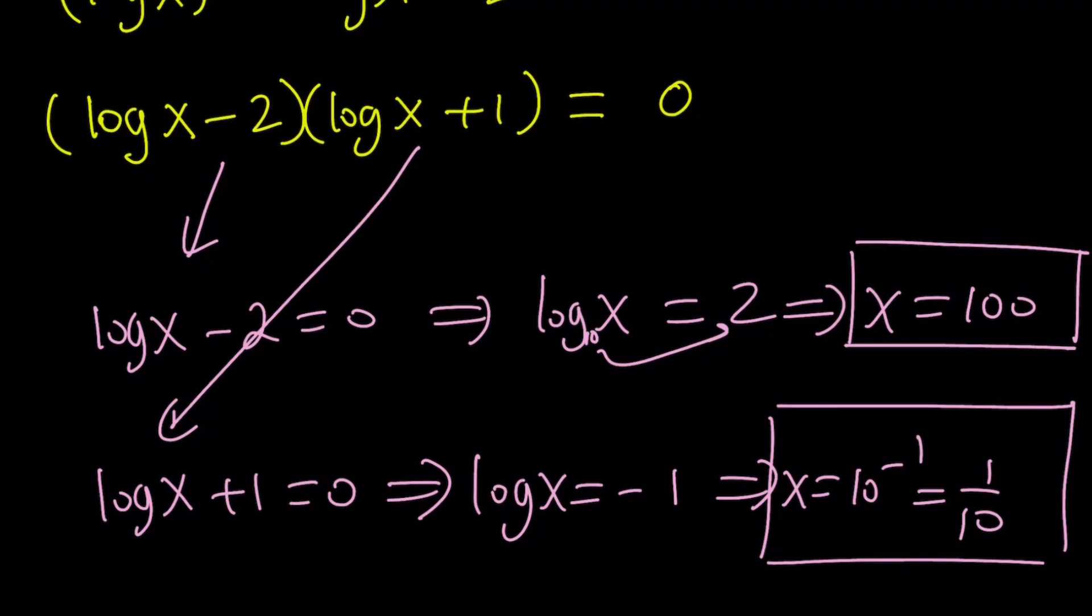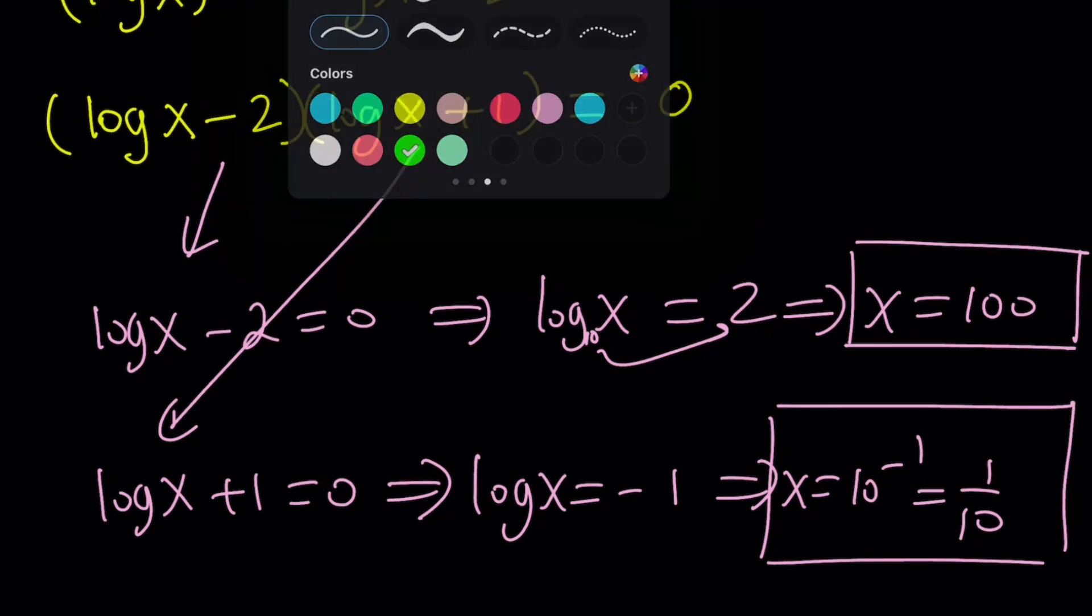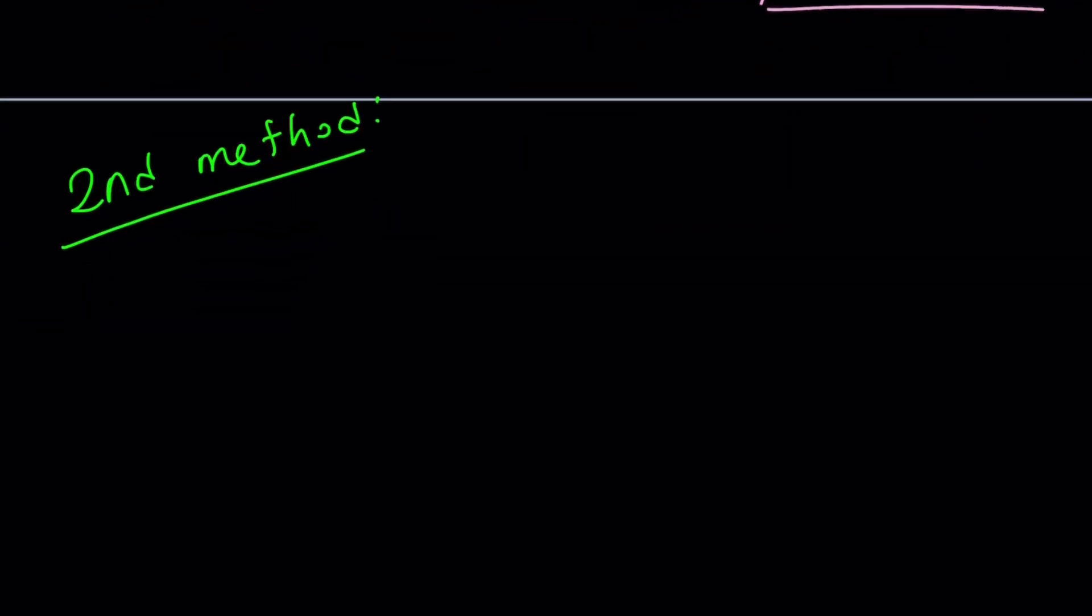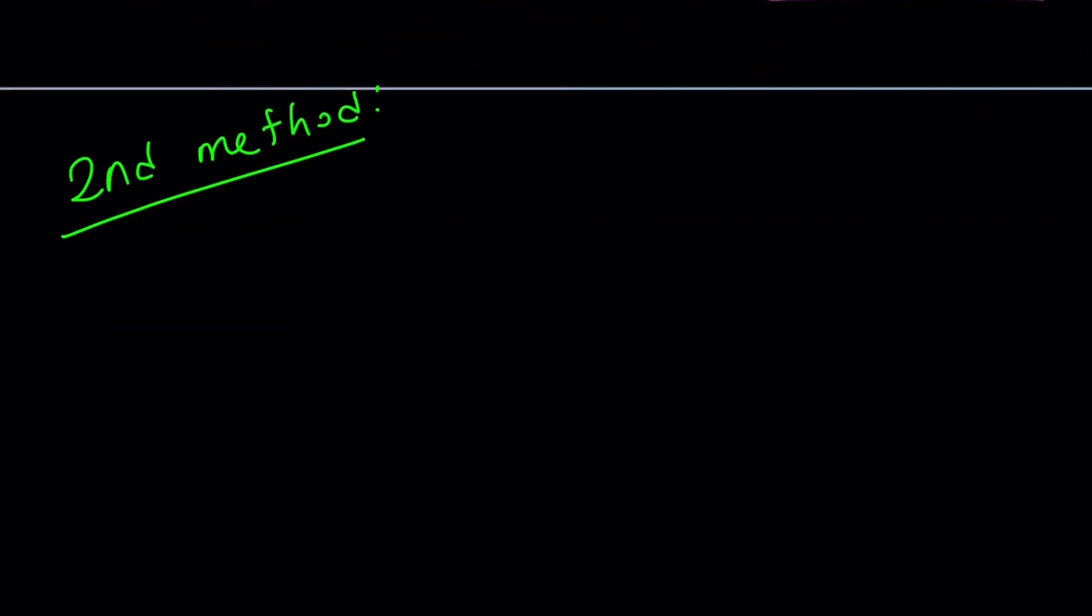So those are the solutions, so that's the end of the first method. Let's go ahead and take a look at the second method. And then we'll talk about a possible alternative. If you want to call that third method, that's fine. So let's rewrite the original equation. x to the power of 1 minus log x equals 1 over 100.